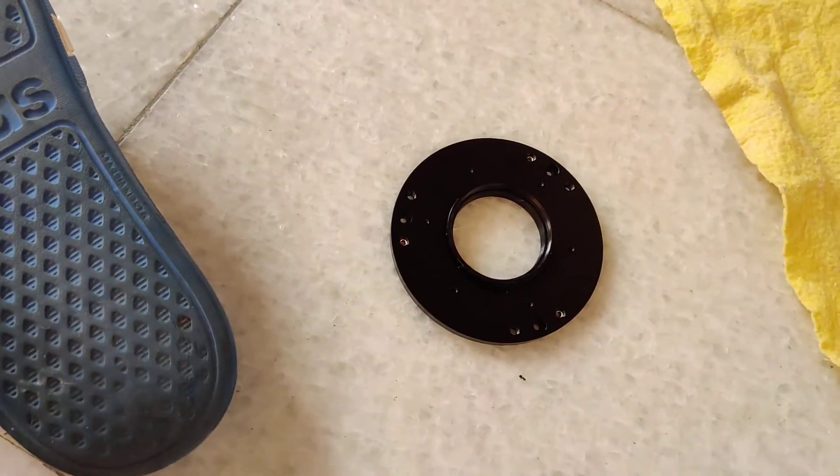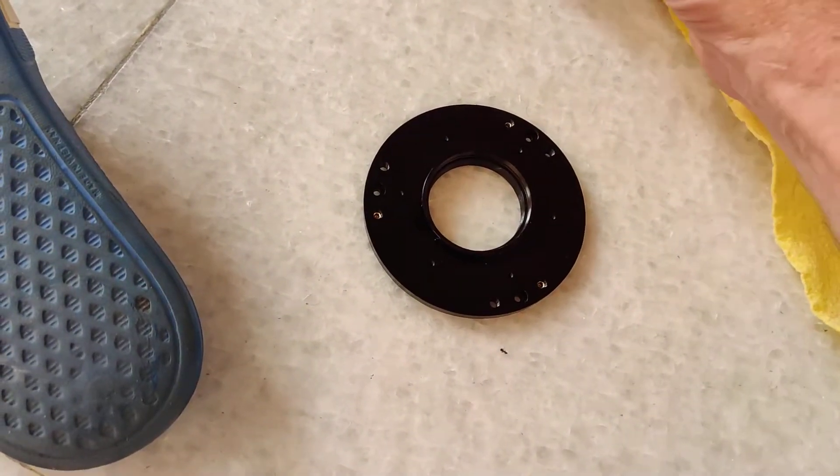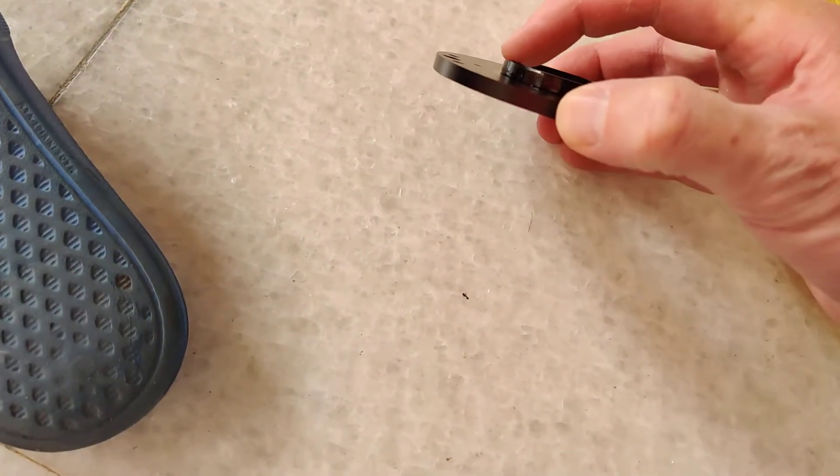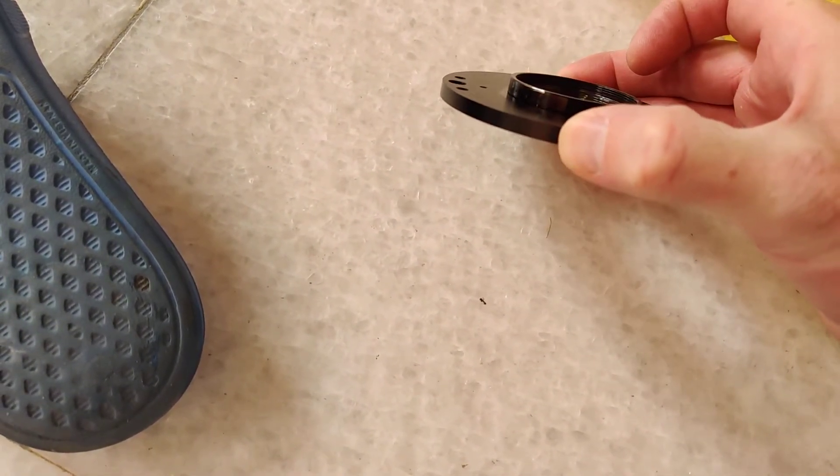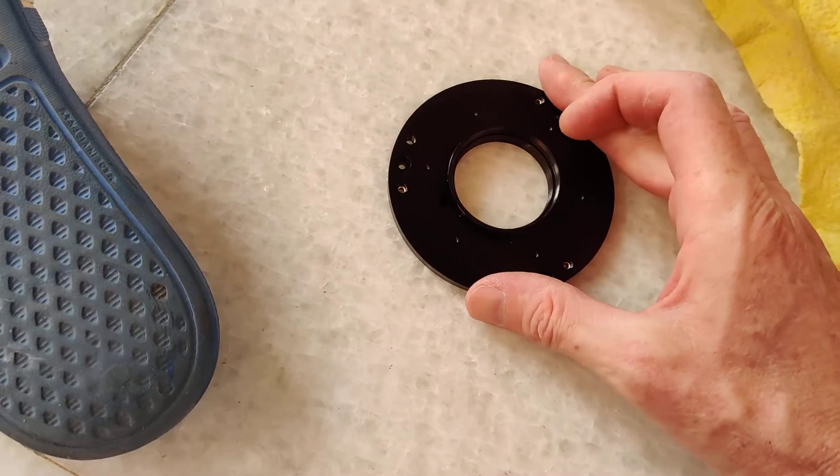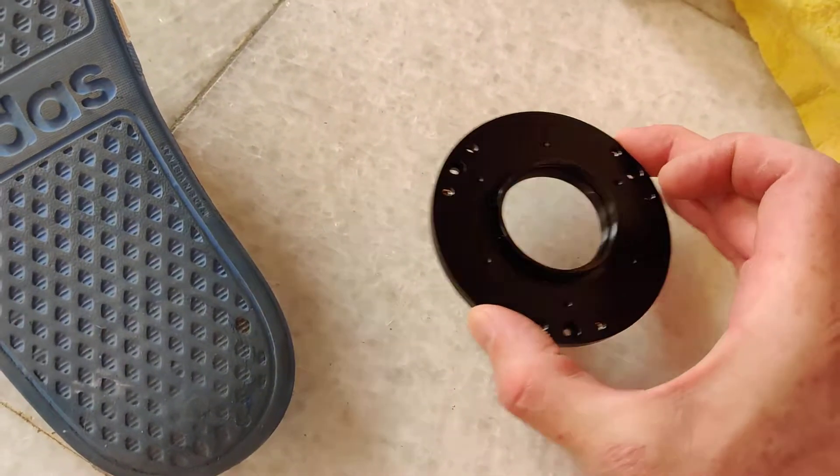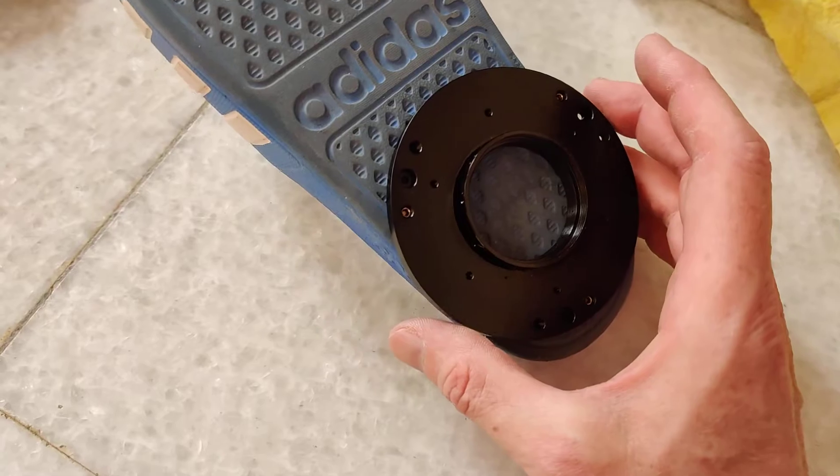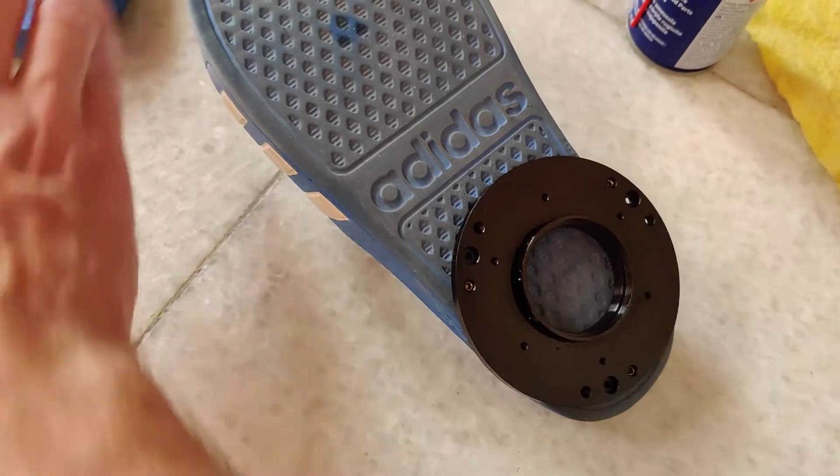I put a tiny drop of WD-40 onto the edge of the metal plate and let that sink into the threads. Then I put on a pair of my daughter's shoes, sliders,